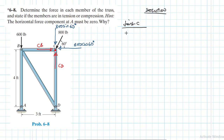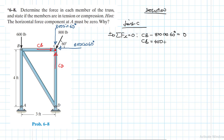Applying equilibrium at joint C, taking rightward as positive: summation of forces in the x-direction equals zero gives CB minus 800 cos 60 = 0, therefore CB = 800 × 0.5 = 400 pounds, and this member is in compression.